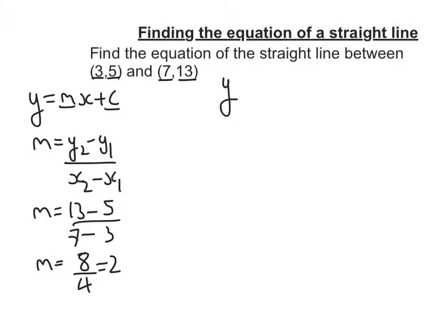So let's sub that into our equation, so it's now y equals 2x plus c. To find c, I'm going to substitute into this equation one of my two points, 3, 5, or 7, 13. Now, I'm going to pick 3, 5, because they are the smallest numbers. So I'm going to sub these in.